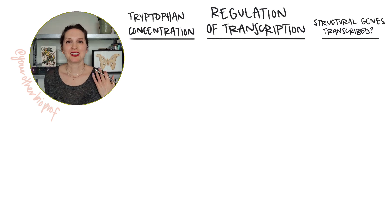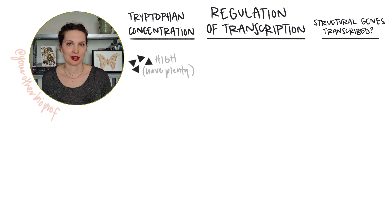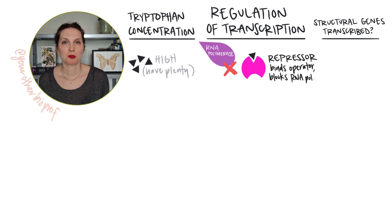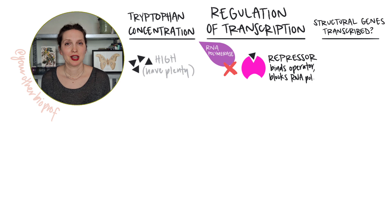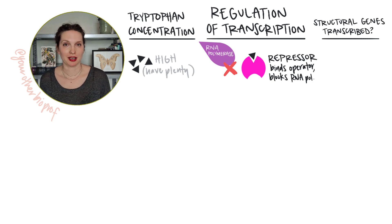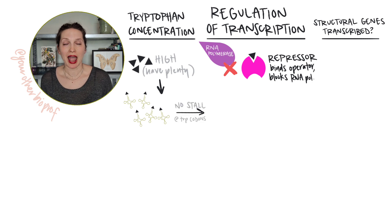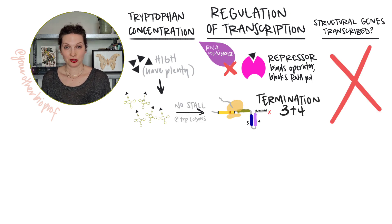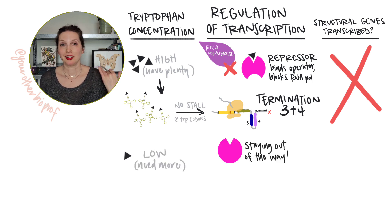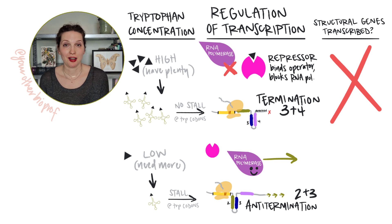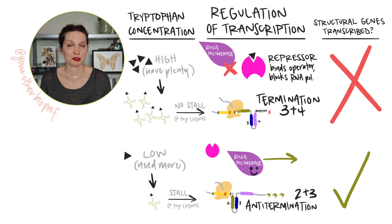Let's put it all together. When tryptophan levels in the cell are high, the E. coli cell does not need to make any more tryptophan. The trp operon is regulated in a negative repressible manner by the trp repressor protein, which blocks RNA polymerase from transcribing the structural genes. Attenuation can further regulate expression by stopping unneeded transcription after it's already begun. When tryptophan levels in the cell are low, there's no repression, no attenuation — transcription is on. RNA polymerase transcribes to produce directions for making more enzymes to build up tryptophan levels in the cell.